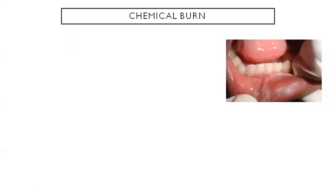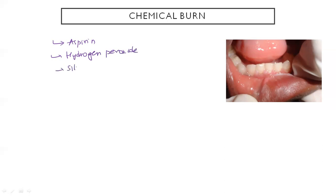Next we have chemical burn. These are present as ulcers and can be caused due to aspirin, hydrogen peroxide, silver nitrates, and phenol.